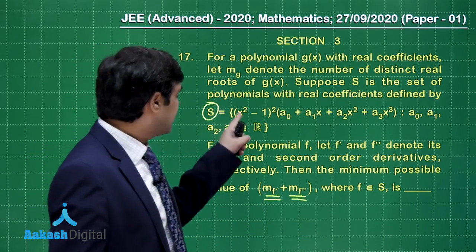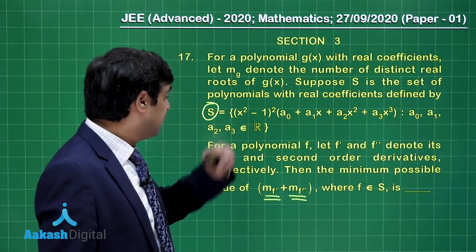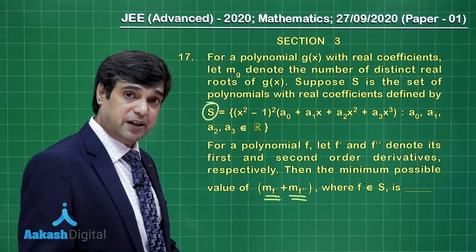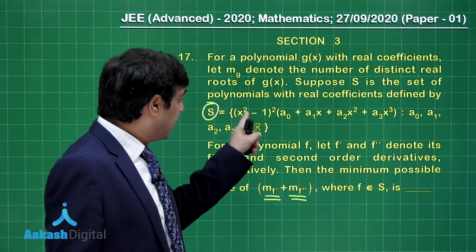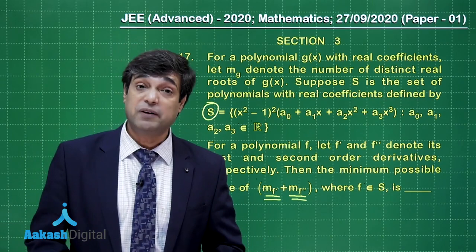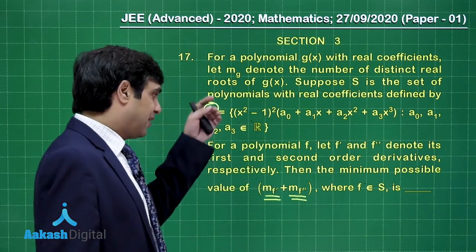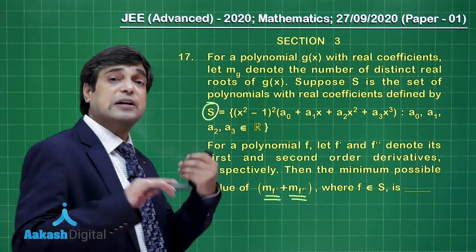Now f is from this one. You can see x square minus 1 whole square, repeated roots. This is clear, it has repeated roots. When you take its derivative, clearly 1 and minus 1 will be the roots and there will be one more root between these two repeated roots. Am I clear on it? Either you can directly conclude or you can go with Rolle's theorem.